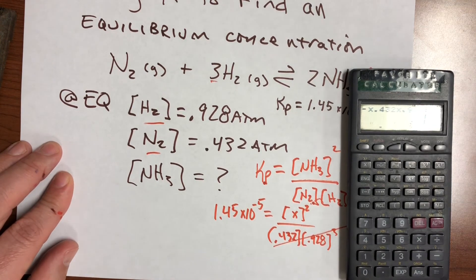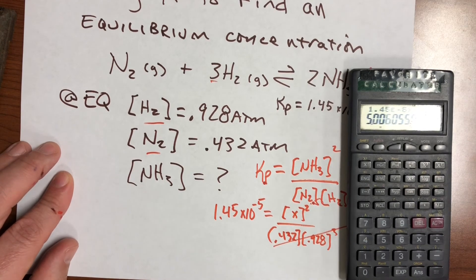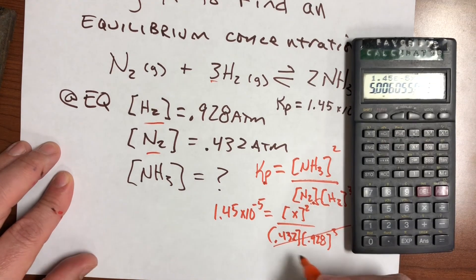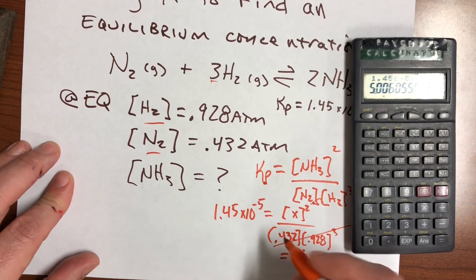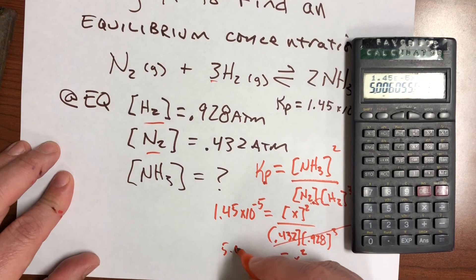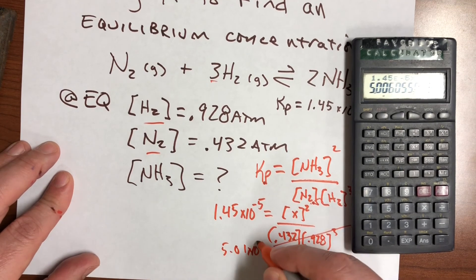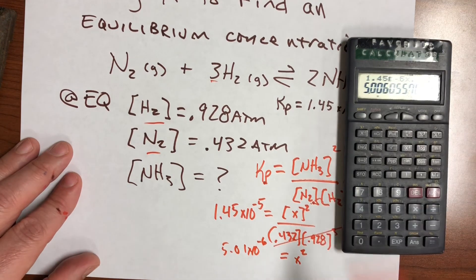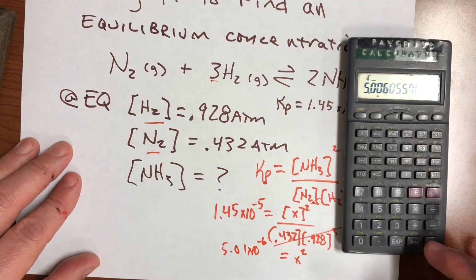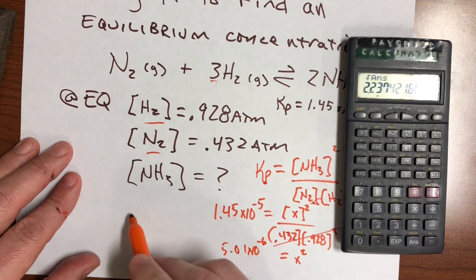I did not use parentheses. That's going to cube just the 928. And that gives me X squared is equal to, I'll just call that 5.01 times 10 to the negative 6th. But that's not the answer. That is the answer squared. So we're going to take the square root of the answer.